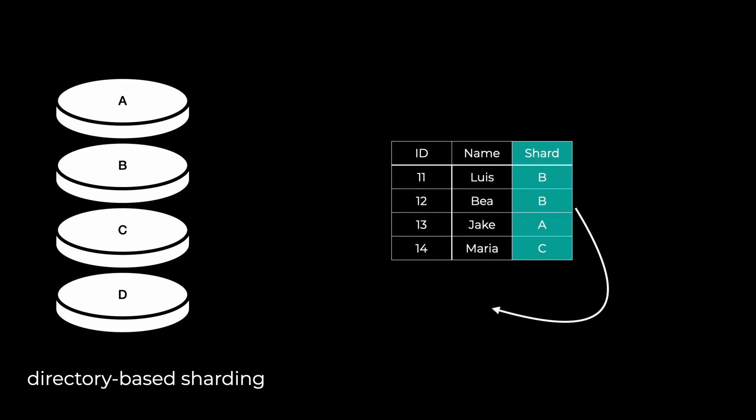A strategy that allows more dynamism when hotspots appear is directory-based sharding. Here, a lookup table works as a reference guide to understand where data lives. If a celebrity client takes up too much of a shard, you can update the table to point them to a different shard. The downside is implementation complexity, and the lookup table itself becomes a critical single point that must always be available — which can also create a performance constraint.